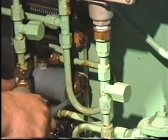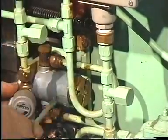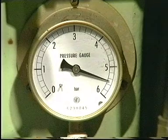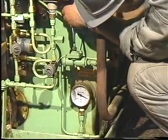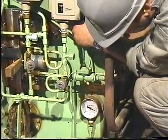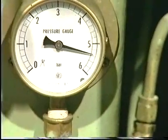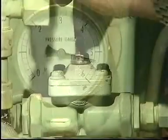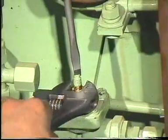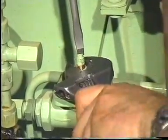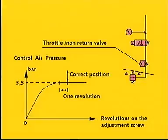Note that it will not be possible to obtain the correct pressure if the throttle non-return valve is not fully open. Screw the spindle clockwise until a pressure drop can just be registered. Screw the spindle counter-clockwise one revolution and lock it in this position with a lock nut. This position prevents a sudden increase in VIT index and thereby a sudden increase in the maximum combustion pressure.